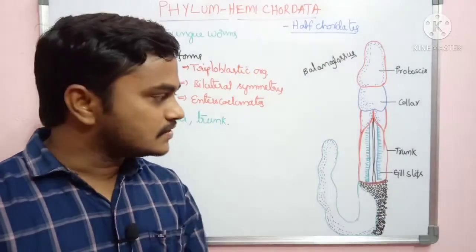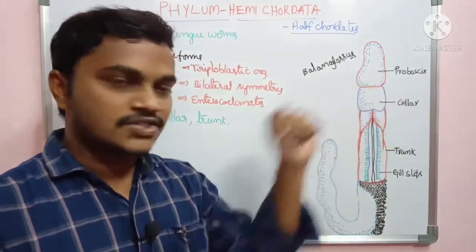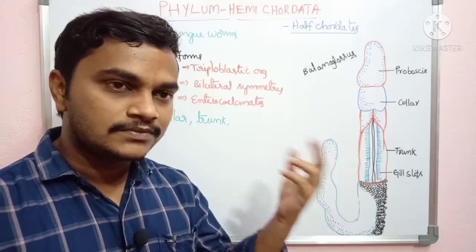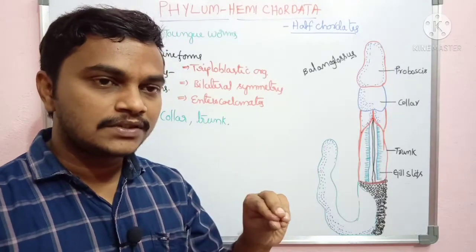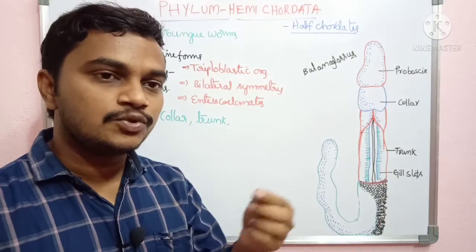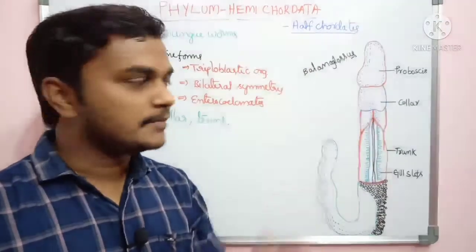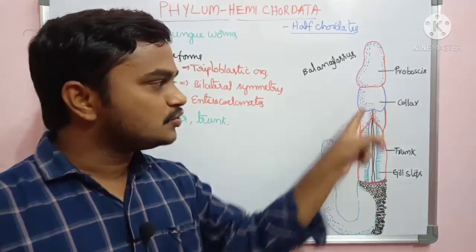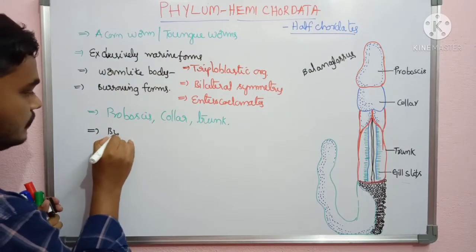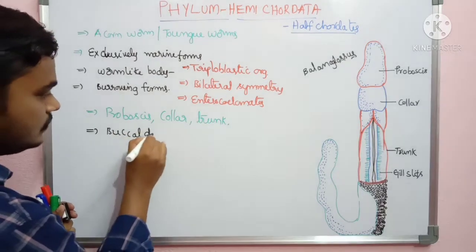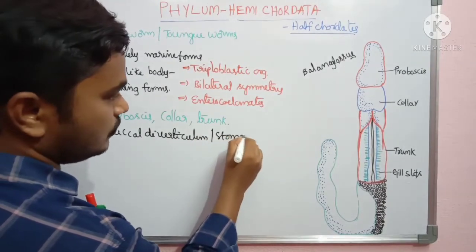The digestive system of hemichordates contains a buccal diverticulum, also called as stomochord, which extends into the proboscis region. This is why it was initially believed to be a chordate form. However, it is actually a digestive system part — the stomochord or buccal diverticulum extends into the proboscis region, and is not a true notochord.